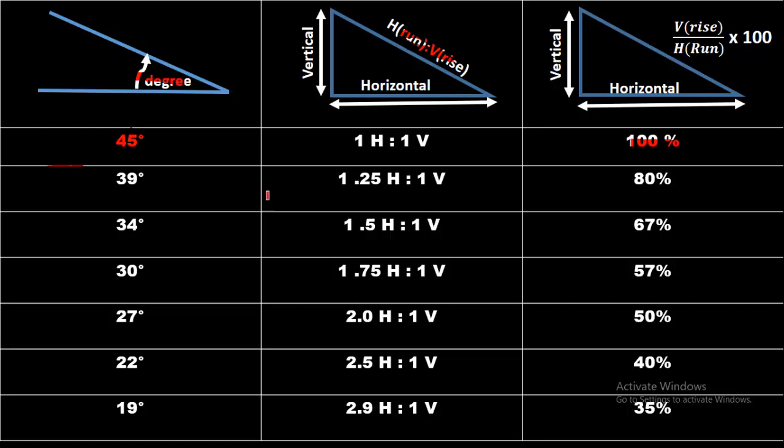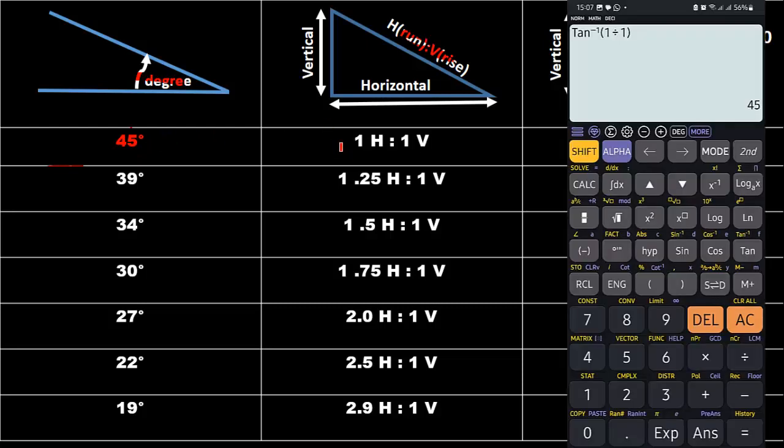Let's suppose we have 1 horizontal and 1 vertical. If we use the trigonometric formula to get the answer in degrees, we will use the formula tan inverse. To get the answer in degrees, tan inverse of 1 divided by 1, as you can see here in the picture.